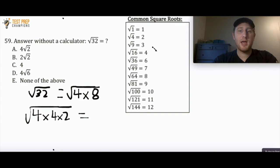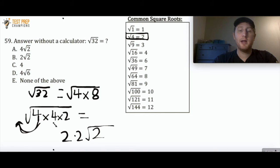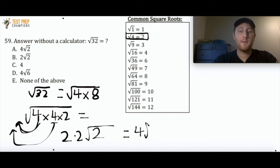Looking at our common square roots list, the square root of 4 equals 2. I've got the square root of 4 × 4 × 2. I can pull each square root of 4 outside as a 2, giving 2 times 2 times the square root of 2. Since 2 times 2 is 4, this leaves me with 4√2. So the answer is A, 4√2.